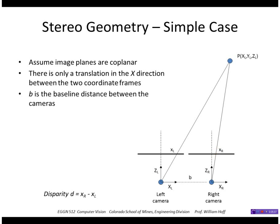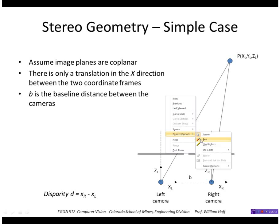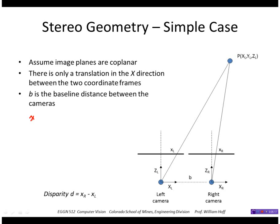So if I have a point P, it projects to point with image coordinate little xl and here little xr. So let's figure out what the disparity would be as a function of depth. Little xl is the focal length times big Xl over big Zl.